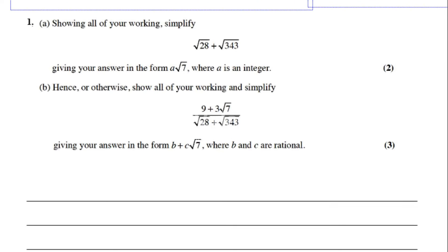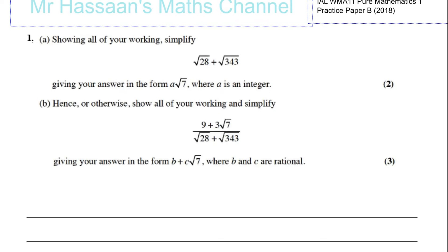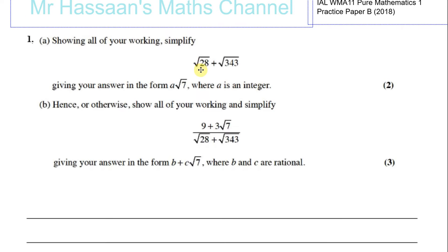Here we have a question about surds. It says showing all your working, simplify root 28 plus root 343. Okay, so here we have to be very careful not to lose marks by not showing sufficient working. These are the type of question where you could just type this in your calculator and the answer will come out as required. Now I'll show you how that will happen.